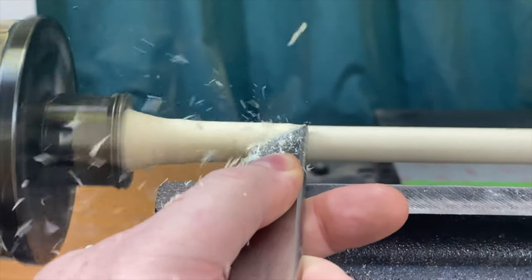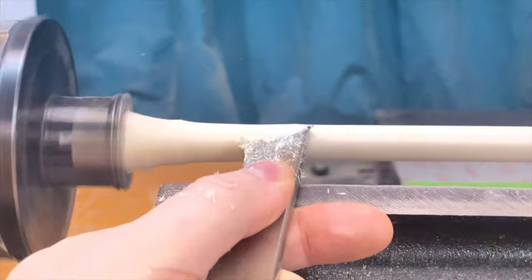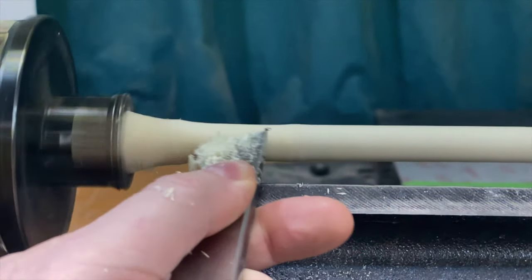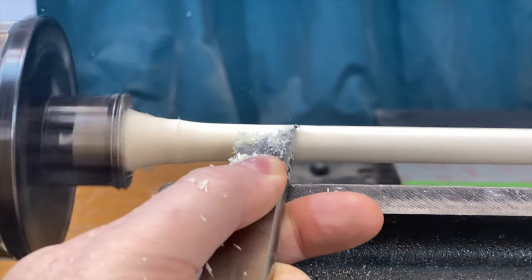There's hundreds of great videos on skew chisel usage, which is the tool I would suggest, and turning spindles, so I'm not going to tell you how to use that. I'm going to assume that you've made something that looks like a stick and are ready for the next step.